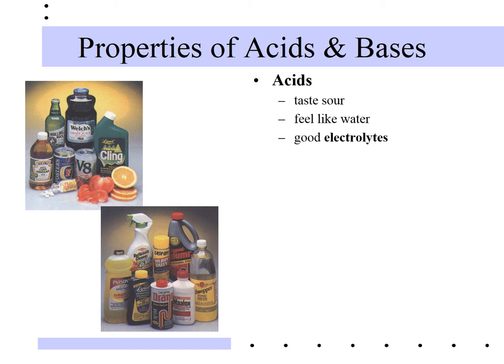Acids make good electrolytes — an electrolyte is a substance which, in water, produces ions, and that allows the water to conduct electricity. So it produces ions in water, and the resulting solution conducts electricity. At 25 degrees Celsius, the pH of an acid will be less than 7. You were probably introduced to the pH scale back in elementary or middle school, though you probably didn't realize it's linked to temperature — and we'll see later that's because there's an equilibrium constant involved.